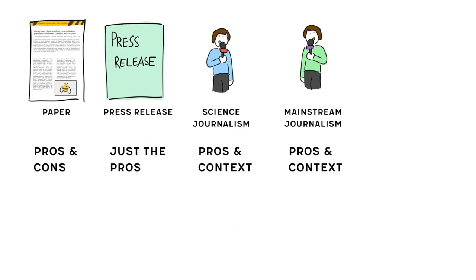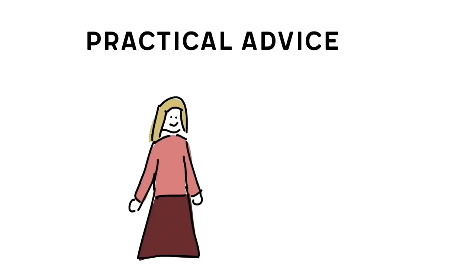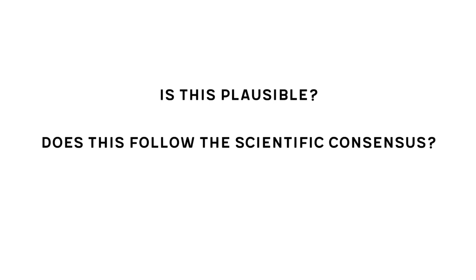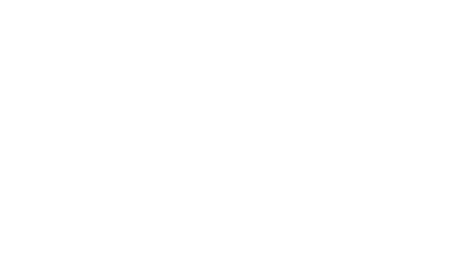Before we end, I want to give you some practical advice on how to assess the credibility of a story and how to understand science better. When I read scientific information, the first question I ask is: is this plausible and does this follow the scientific consensus? If both answers are no, then you should carefully check the sources — more often than not, these results are outliers that somebody exaggerated to get news coverage, or someone is actively reframing scientific information for their own goals. To get a feeling about scientific consensus, it is a good idea to look for joint statements from research communities, like for example from Scientists for Future.